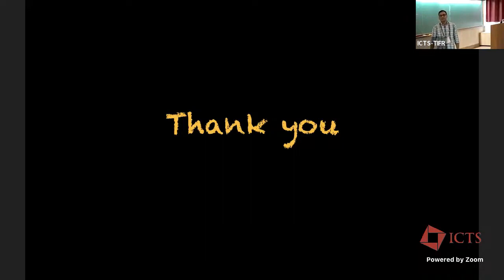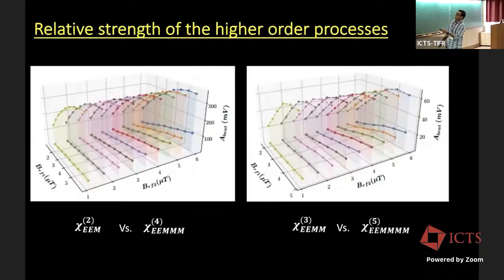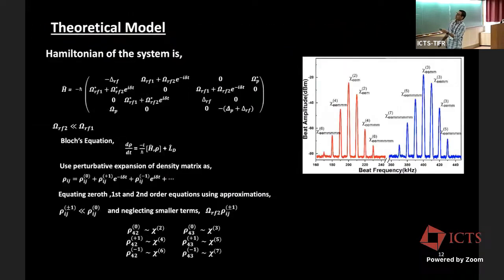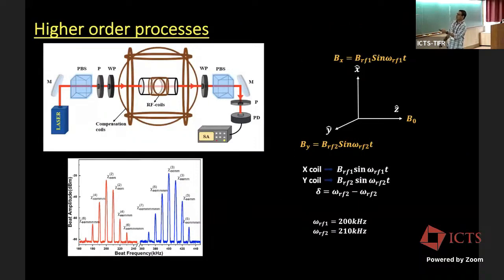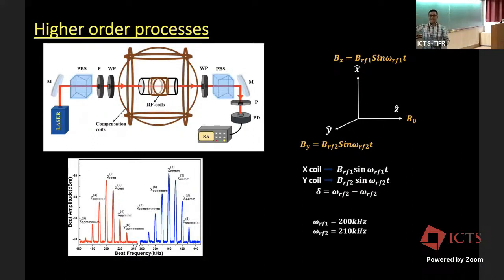Audience question: Really interesting results. Did you see the expected power-law scaling with field strength for the higher-order processes — for example, quadratic or cubic scaling for chi-5? Response: For the higher-order processes we haven't looked at that yet. But in the first paper we verified chi-2 and chi-3: the chi-2 process is linear in the magnetic field amplitude, and chi-3 goes quadratic. The data is there.